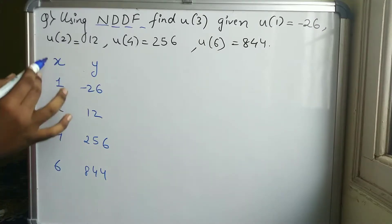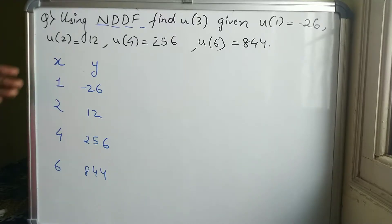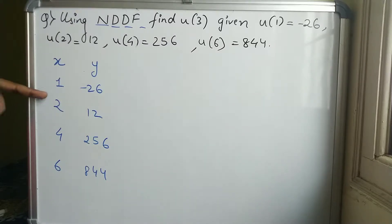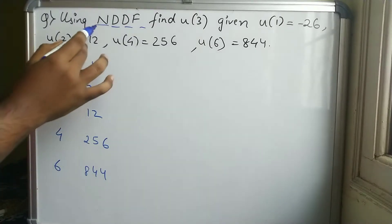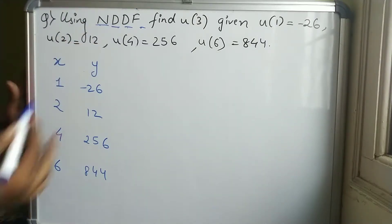You can observe that the x values have unequal intervals — the width between the first two terms is 1, and between the next two terms is 2. So for unequal intervals, we apply Newton's Divided Difference Formula. Lagrange's interpolation formula could also be applied, but here we use Newton's Divided Difference Formula.